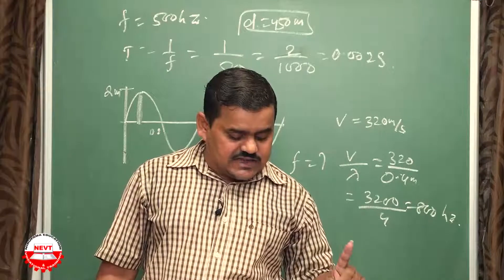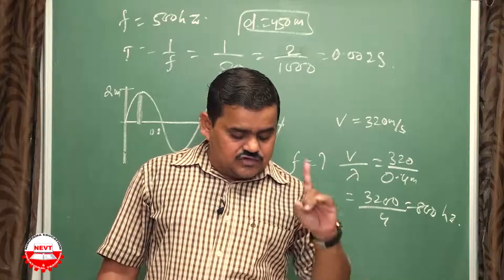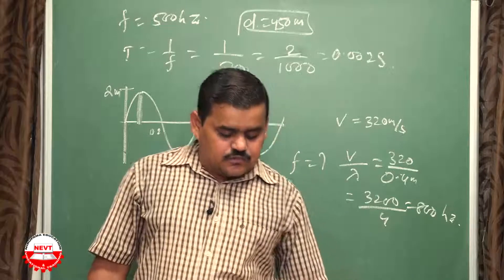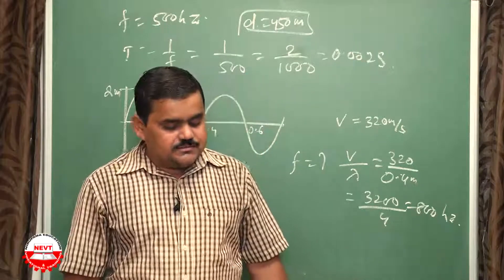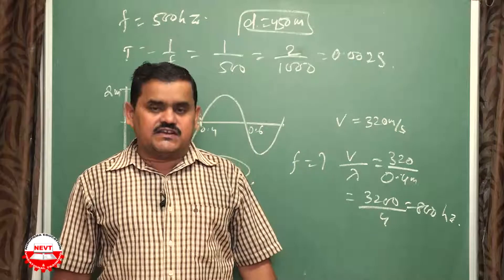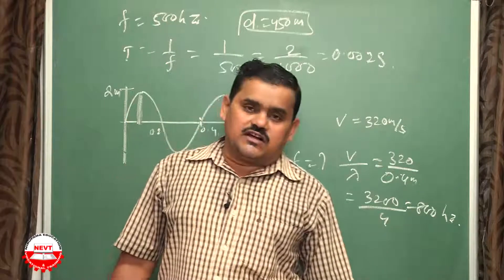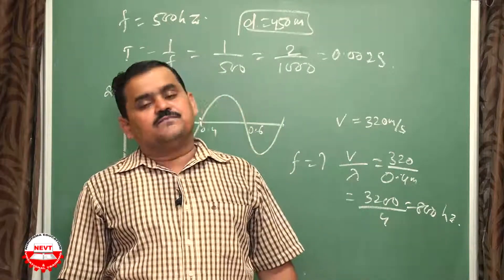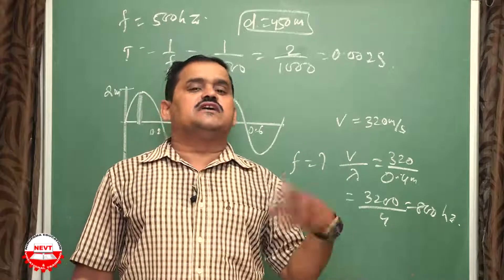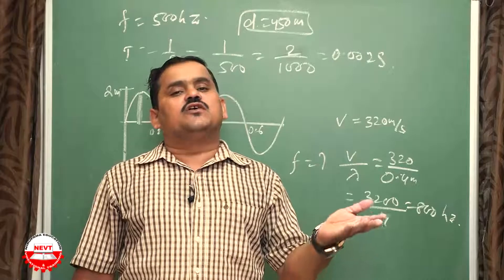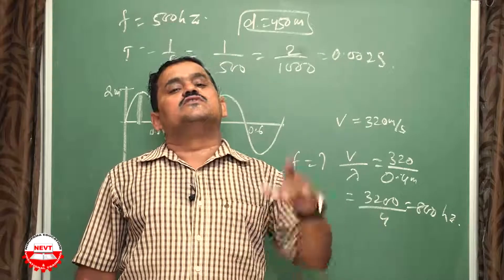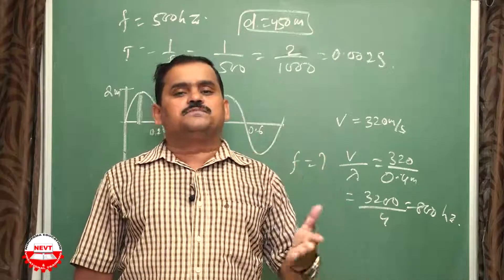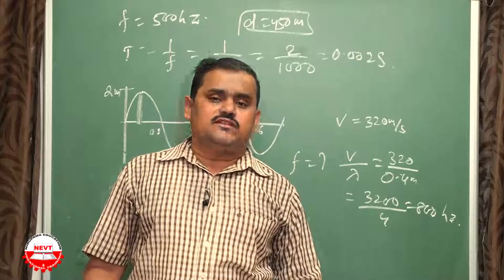Calculate the wavelength of a sound wave whose frequency is 220 Hz and speed is 440 m/s. Using v = fλ: wavelength λ = V/F = 440 / 220 = 2 meters.